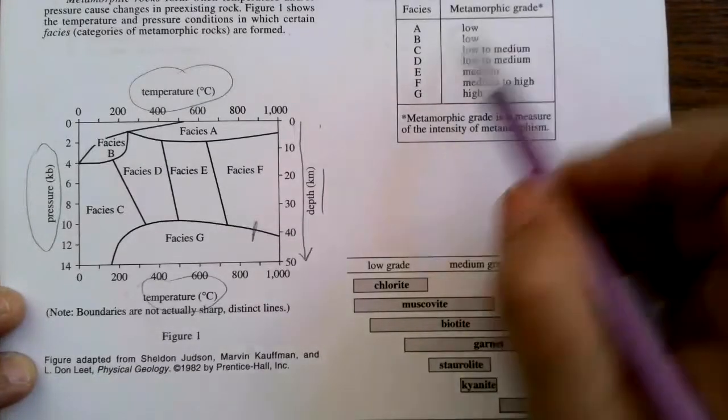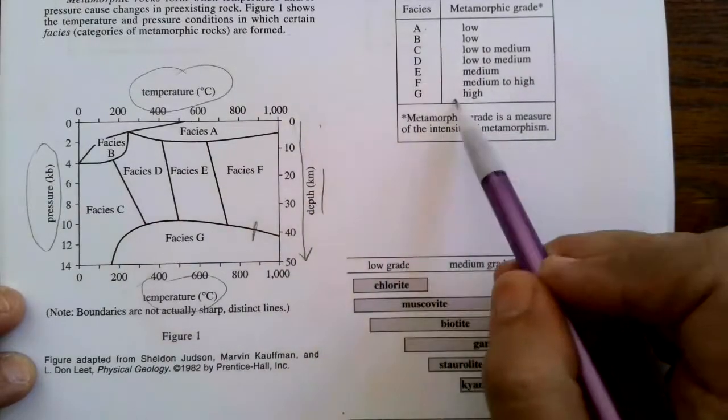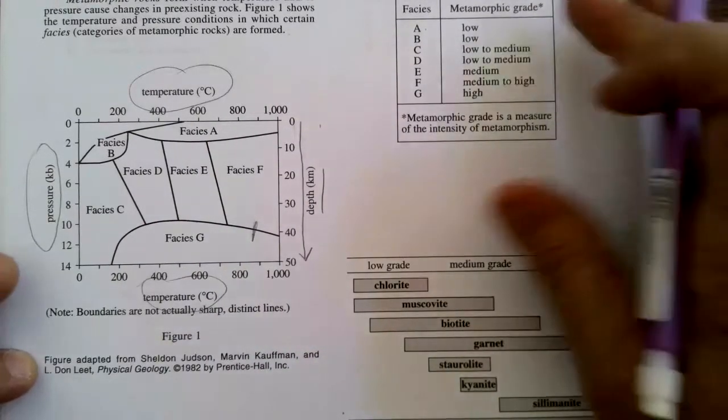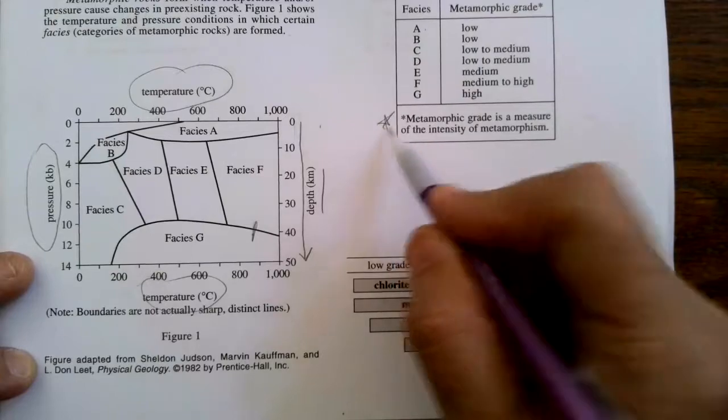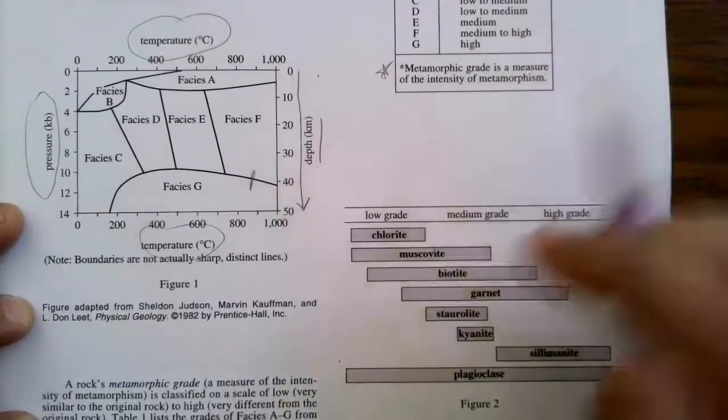Table one lists the grades of facies A through G from figure one. So here's A, A is low, G is high, and this gives me another definition, tells me again what metamorphic grade is.